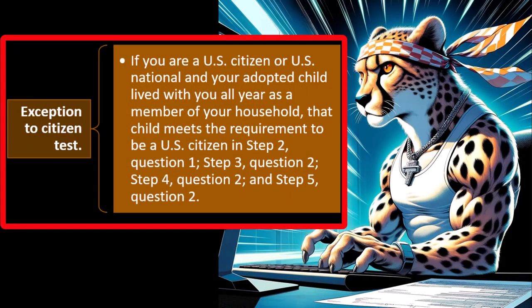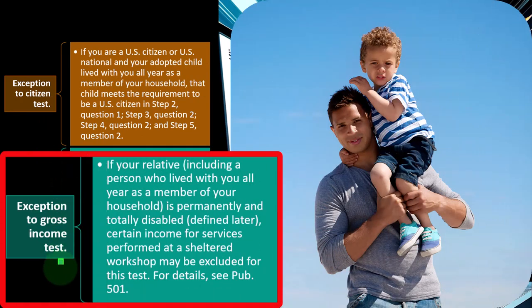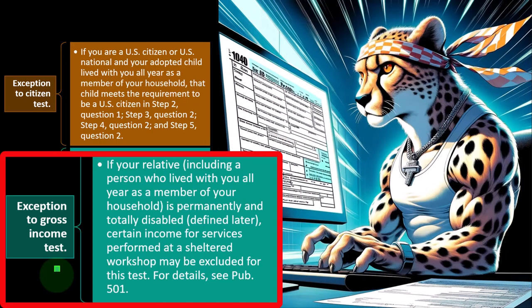Exception to the citizen test: if you are a US citizen or national and your adopted child lived with you all year as a member of your household, that child meets the requirement to be a US citizen in the qualifying child questionnaire steps. Exception to the gross income test: if your relative, including a person who lived with you all year as a member of your household, is permanently and totally disabled, certain income for services performed at a sheltered workshop may be excluded for this test.